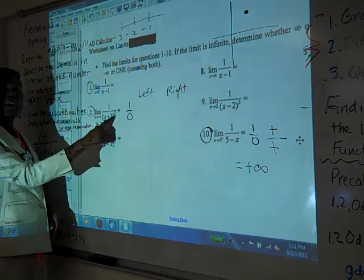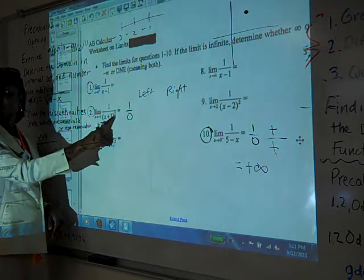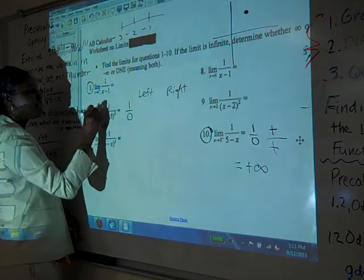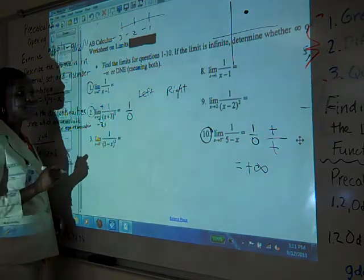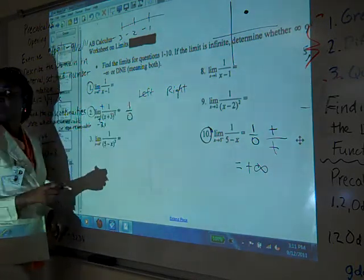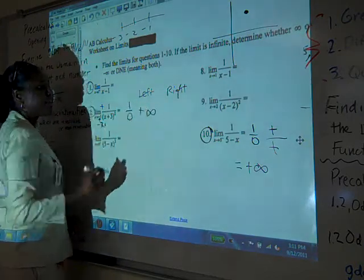The number that was a test number was negative three point one. So if you put negative three point one in the bottom, plus three, you're going to get a negative point one, right? But you got to square it. So what's going to happen to the answer? Positive. It will be positive. So I've got a positive at the top, positive at the bottom. So what is the left side going to? Positive infinity. Positive infinity.